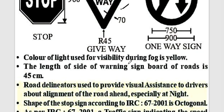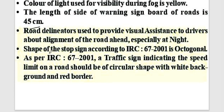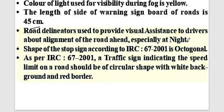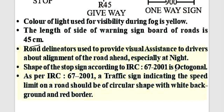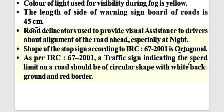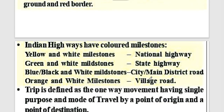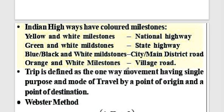The color used for visibility during fog is yellow. The length of the side of a warning sign border is 45 centimeters. Road delineators provide visual assistance to drivers about road alignment, especially at night. The stop sign is octagonal as per IS codes. As per IRC, a speed limit sign should be circular with a white background and red border.